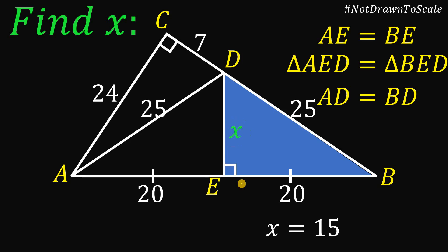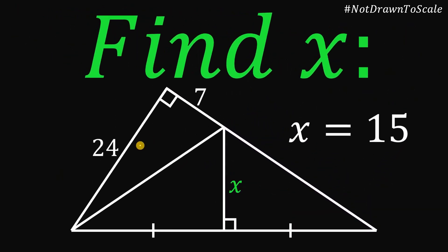Therefore, given this scenario, given this right triangle, the value of the segment X must be equal to 15 units. And as always, we are done.